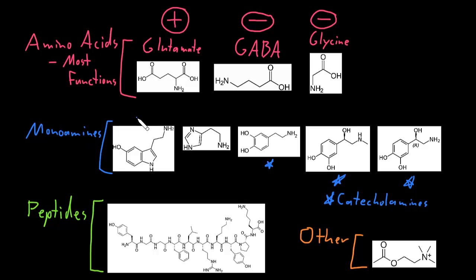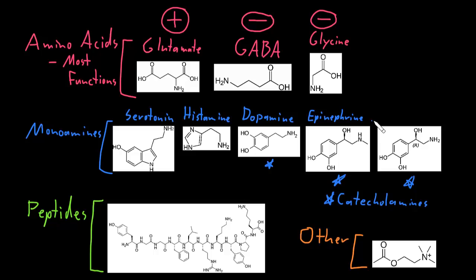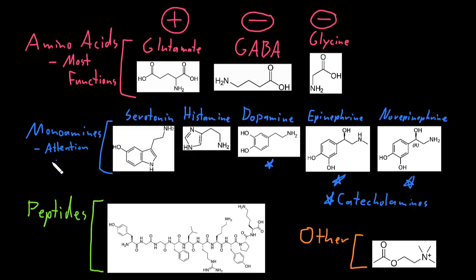There are many important monoamine neurotransmitters, but the five most arguably important are serotonin, histamine, dopamine, epinephrine, and norepinephrine. All five are monoamines, but dopamine, epinephrine, and norepinephrine are also called catecholamines. The monoamines play a lot of different functions in the nervous system, particularly in the brain, including big things like consciousness, attention, cognition or thinking, and emotion.